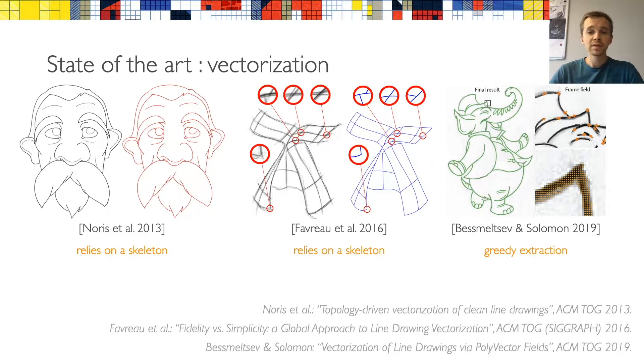Closest to our method is the method by Bessmeltsev and Solomon from last year, which traces the streamlines of a frame field in order to obtain a dense set of candidate curves. They, however, use a greedy algorithm to cluster these curves into the final vectorization. We took inspiration from their use of frame field, but instead of tracing the frame field explicitly, we integrated implicitly using a field-aligned parameterization. An important observation here is that none of these methods is able to merge parallel strokes.